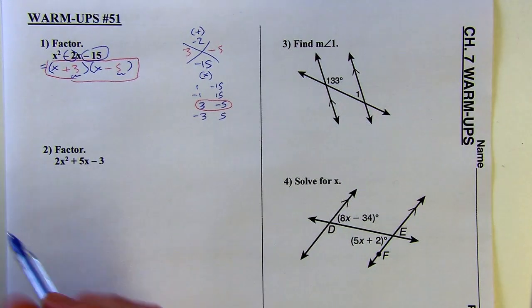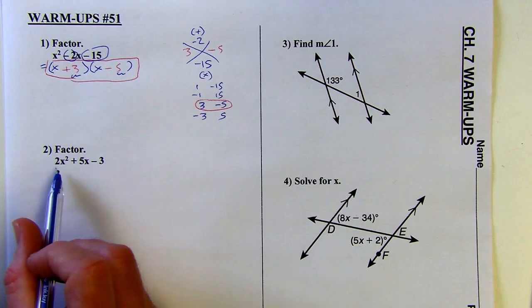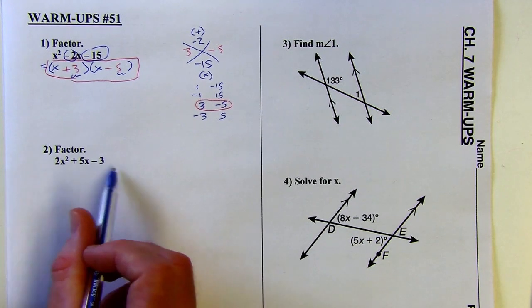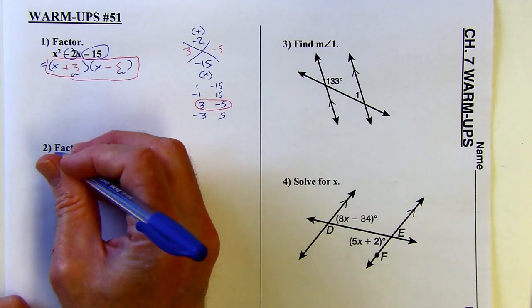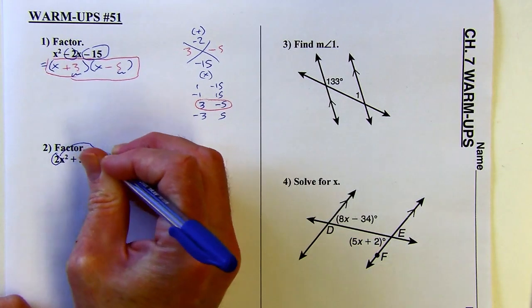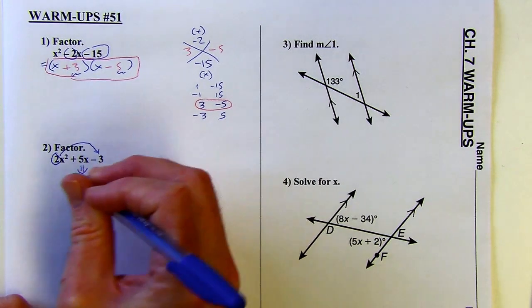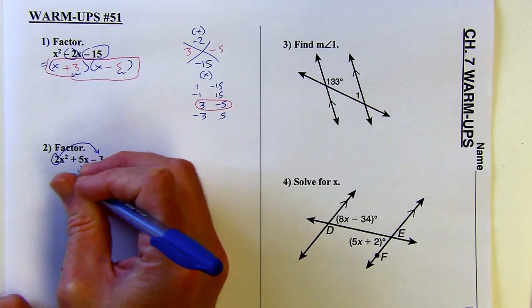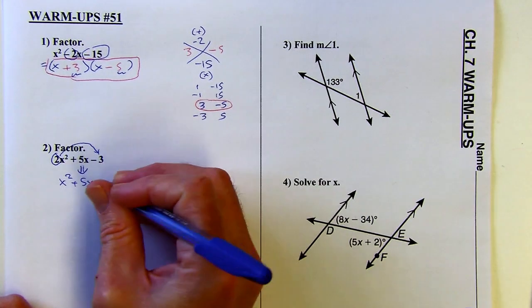It gets a little more complicated on this next problem because I have a number in front of the x squared. So check if you can factor it out, but I don't have even numbers back there, so I can't factor out the two. So I'm going to do what I call a modified diamond problem. I'm going to take this two and multiply it. I'm going to pull it over and multiply it by the negative three. So I'm going to change this trinomial into x squared plus five x, and then two times negative three would be negative six.